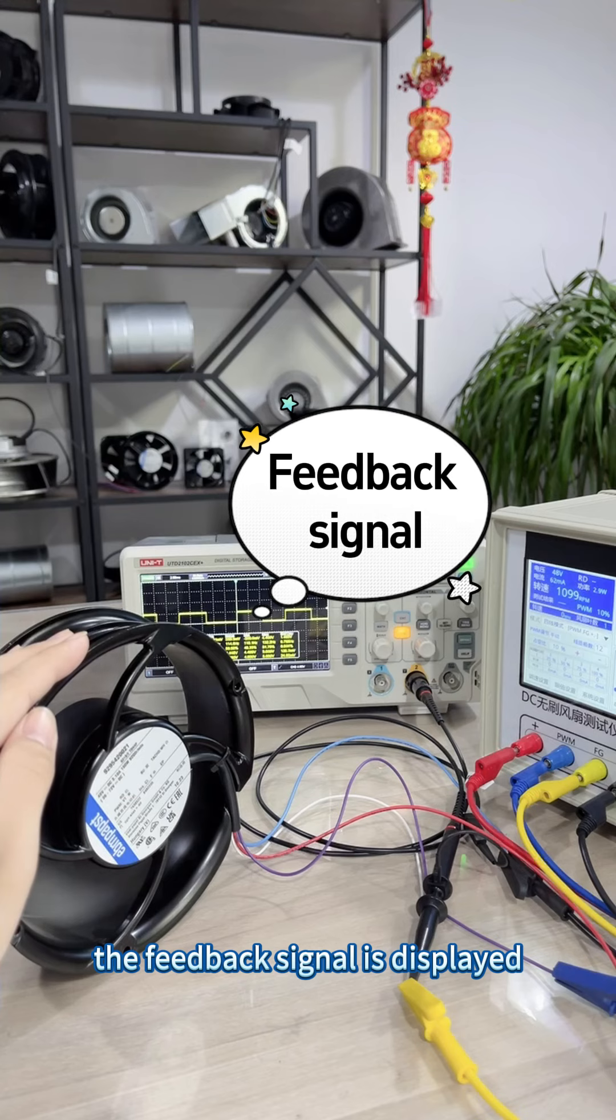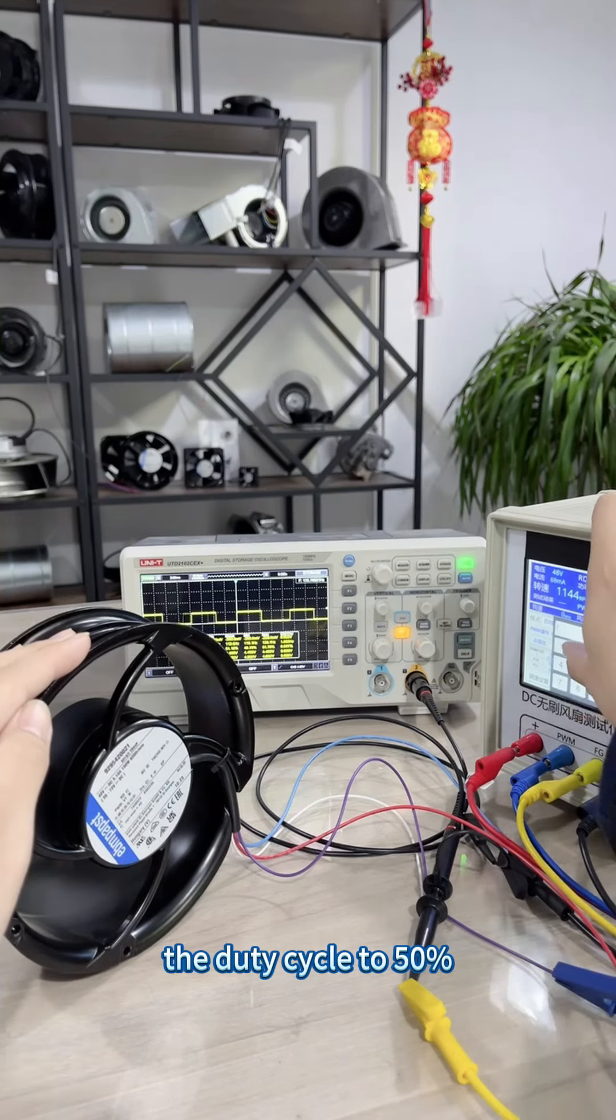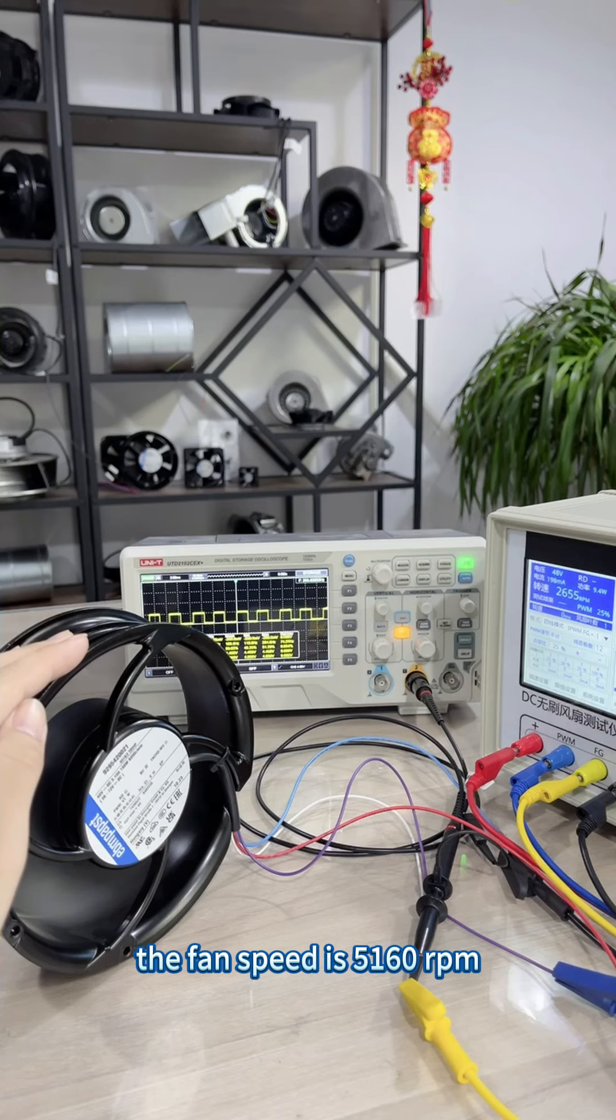The feedback signal is displayed on the oscilloscope. Now, we adjust the duty cycle to 50%. The fan speed is 5160 RPM.